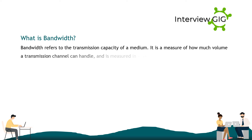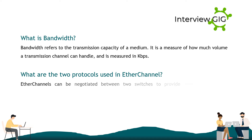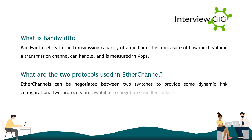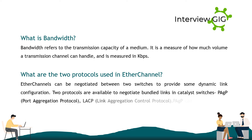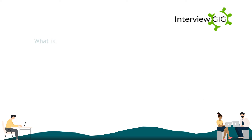What are the two protocols used in EtherChannel? EtherChannels can be negotiated between two switches to provide dynamic link configuration. Two protocols are available to negotiate bundled links on Catalyst switches: PAgP (Port Aggregation Protocol) and LACP (Link Aggregation Control Protocol). PAgP can be used only in Cisco devices, but LACP can be used with other vendors as well.